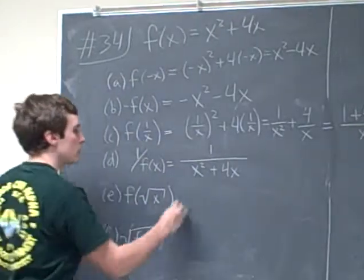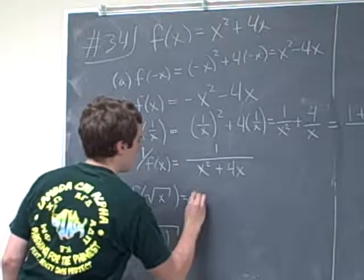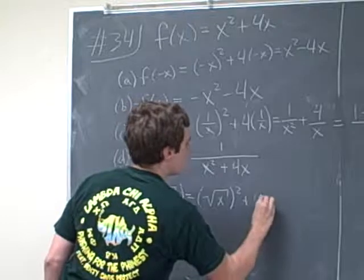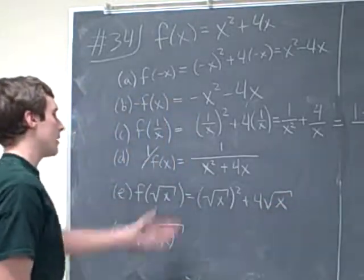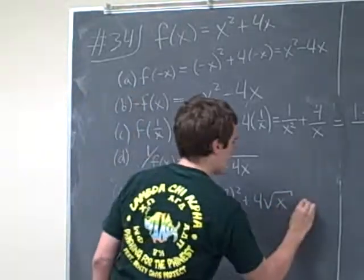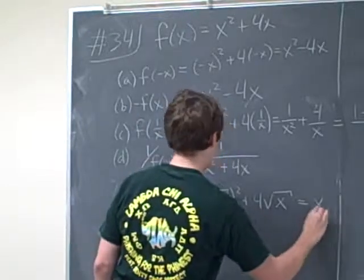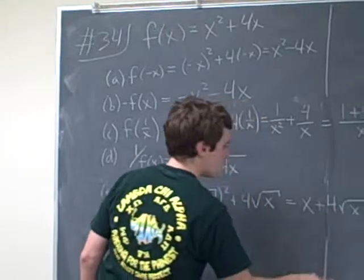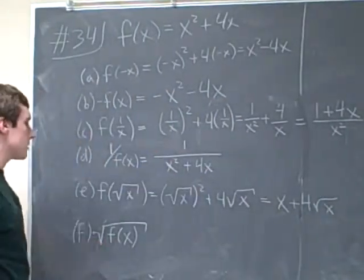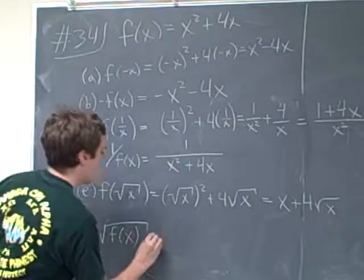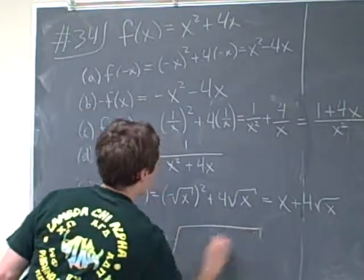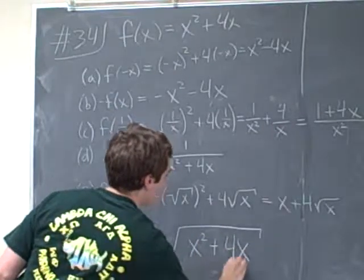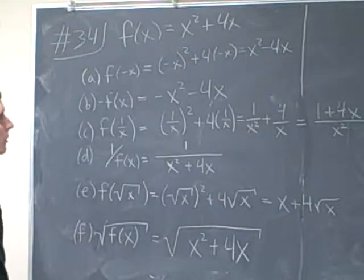Anyways, the next one is f of square root of x. So we have the square root of x squared plus 4 times the square root of x. And the square root of x squared is usually x, so we'll put that, and plus 4 square root of x. And last but not least, the square root of the entire f of x, which will be the square root of x squared plus 4x. And that should be all the answers for you.